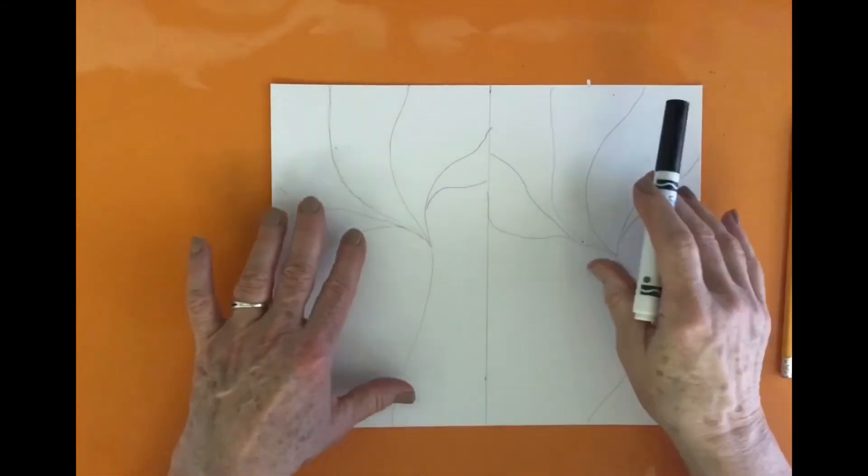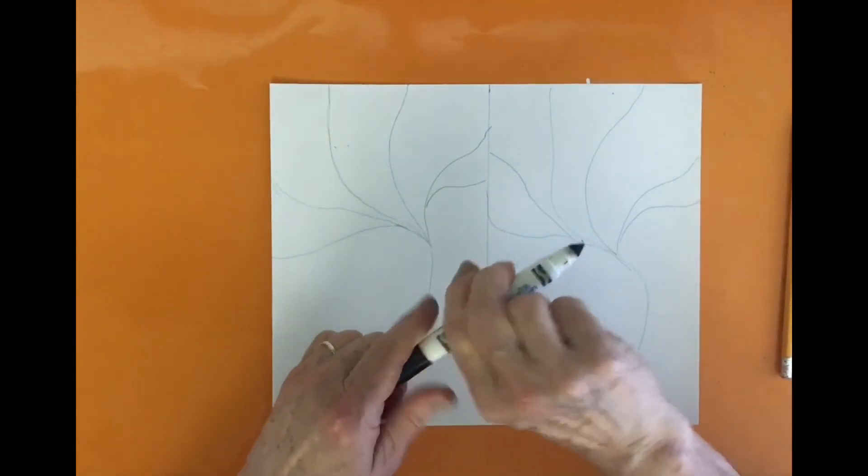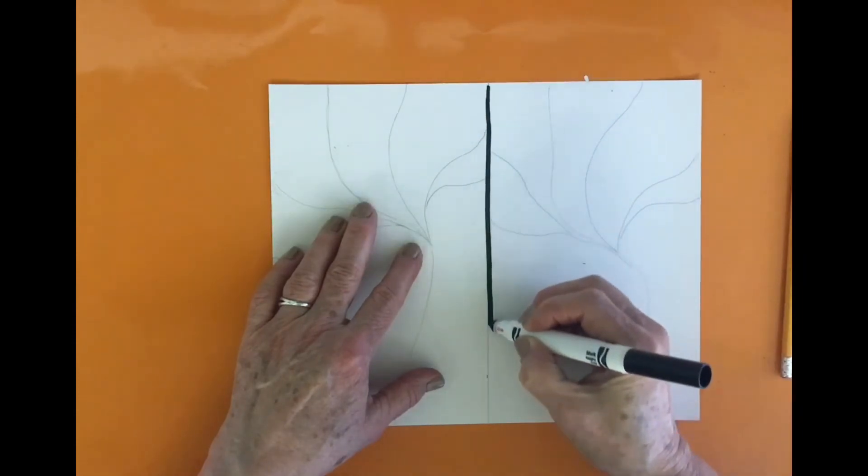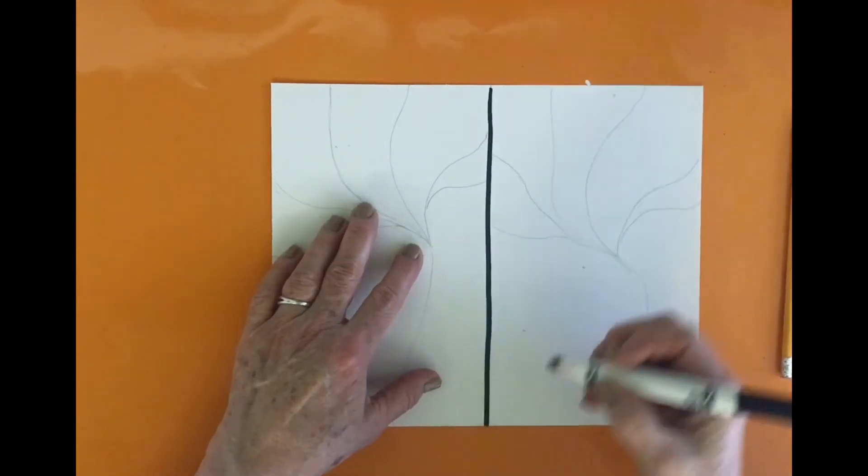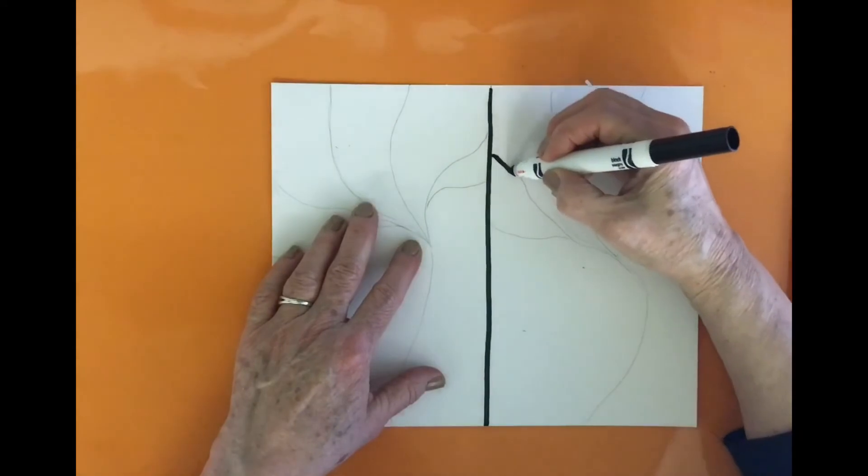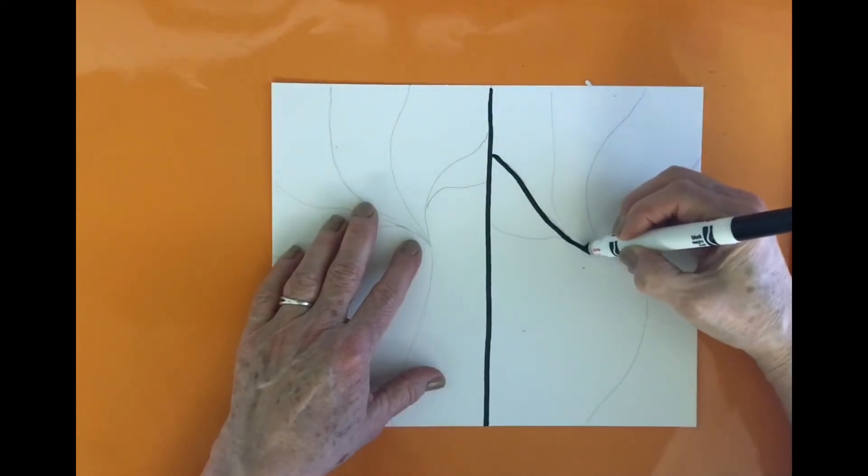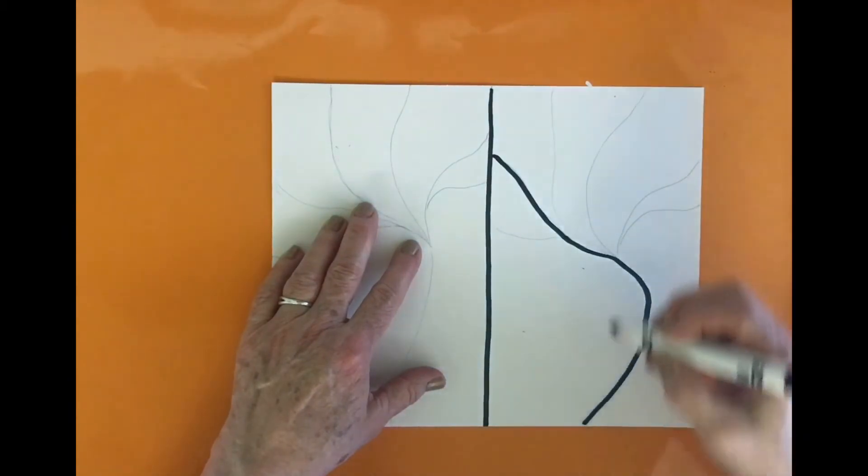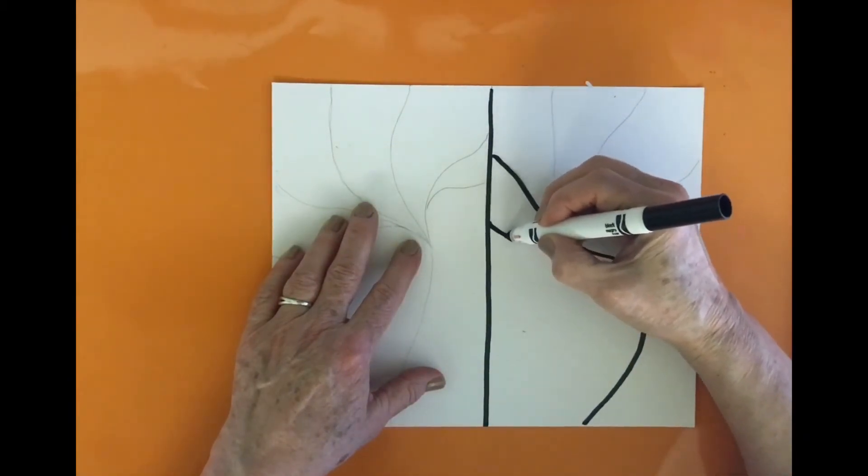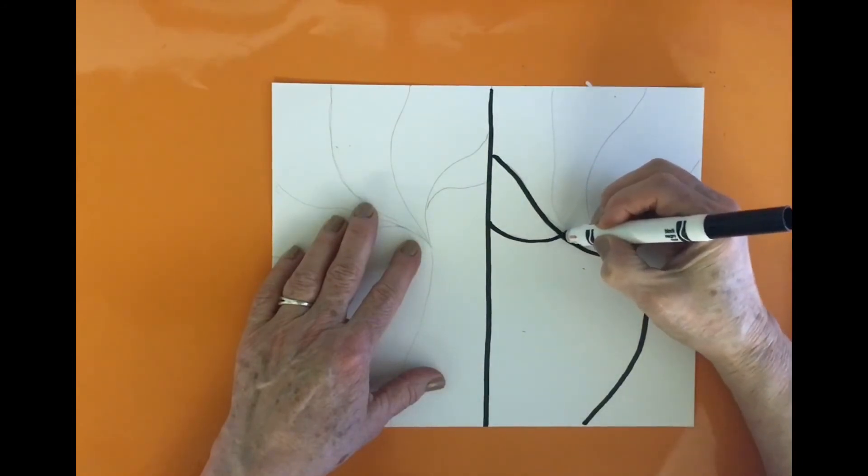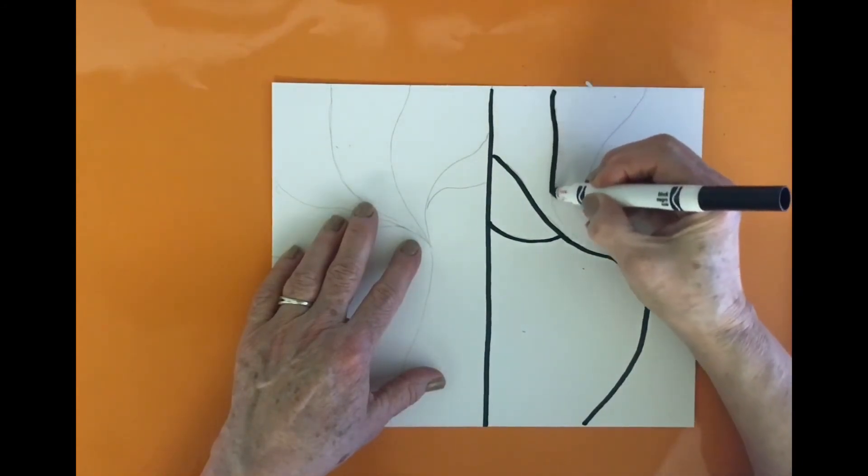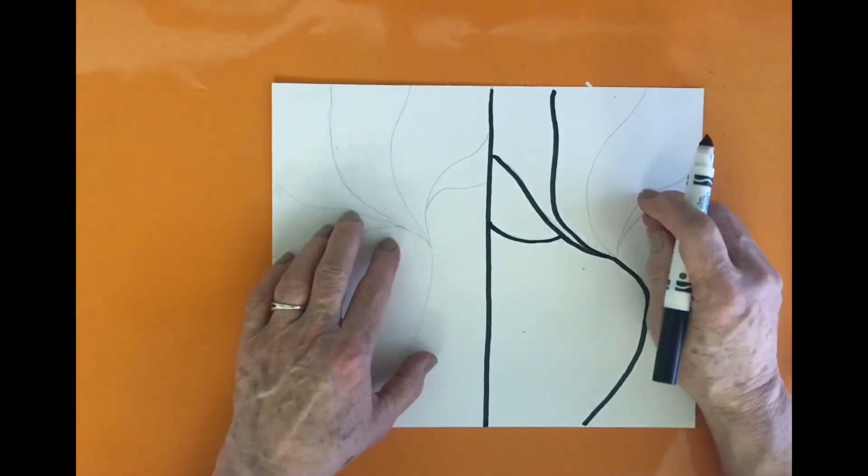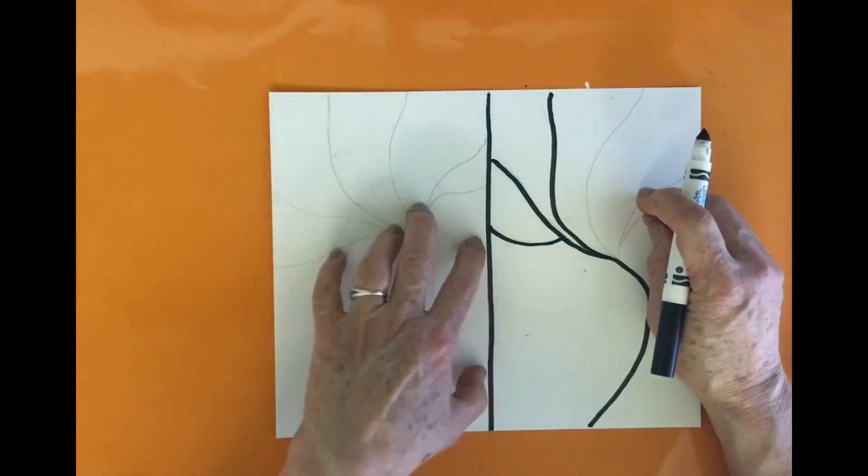Now I have my lines drawn and I'm going to go over them with a black marker. You want to continue this until you have all the pencil lines covered with black marker.